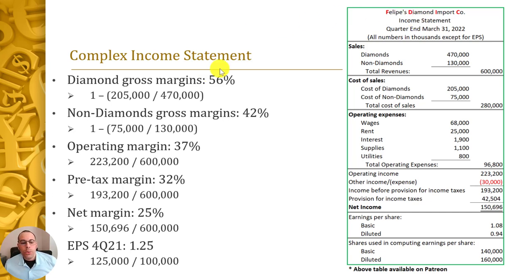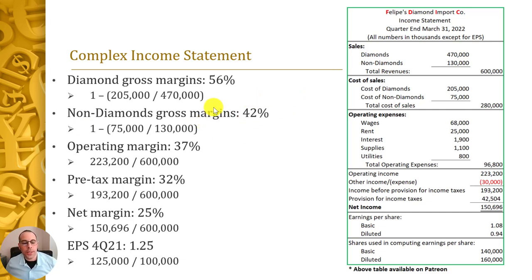Felipe's income statement gives us a lot of useful information about margins. Diamond gross margin is 56%, calculated as 1 minus (205M / 470M) — every dollar of diamond revenue produced $0.56 of gross profit. Non-diamond gross margin is 42%, calculated as 1 minus (75M / 130M). You want higher margins, not lower. Operating margin is 37% — that's $223M / $600M. Pre-tax margin is 32%, and net margin is 25% (net income divided by revenue). You want to track these percentages over prior quarters and compare them to similar companies.